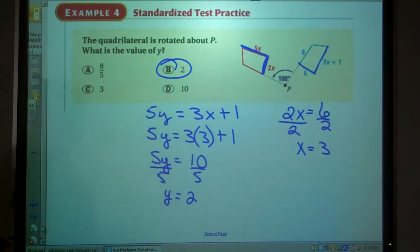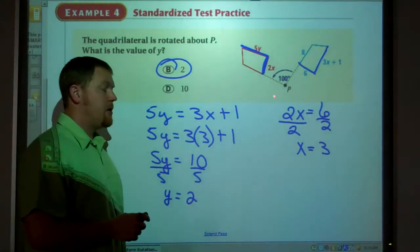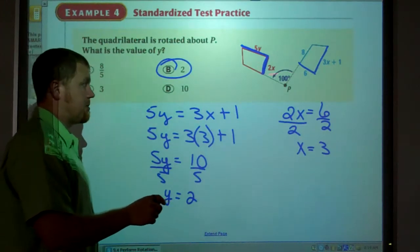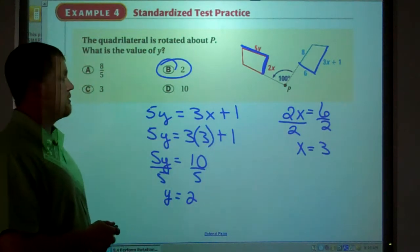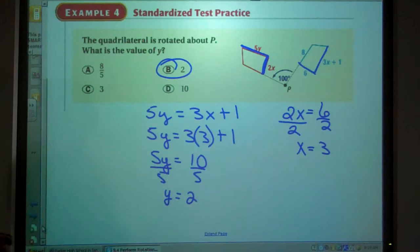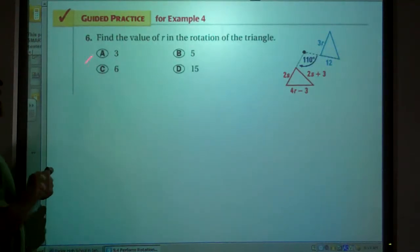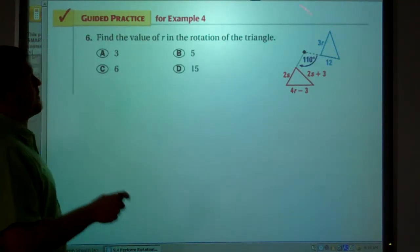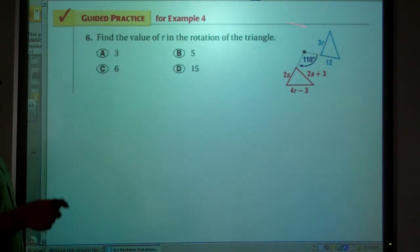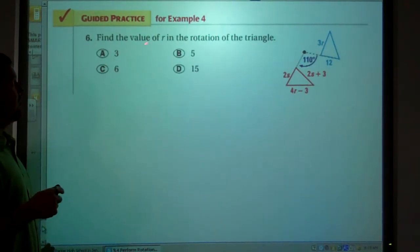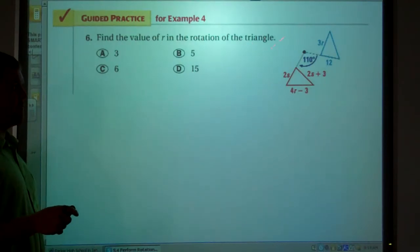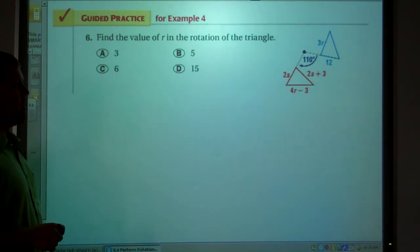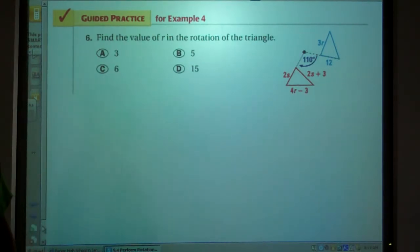So again, a rotation is an isometry, so the figures are congruent. If the figures are congruent, that means the segments are congruent. It means the angles are congruent, and so on and so forth. I want you to try this problem, and we will talk about it in class. We'll find the value of R in the rotation of the triangle. So please try that problem, and we will talk about that later. Thanks a lot.